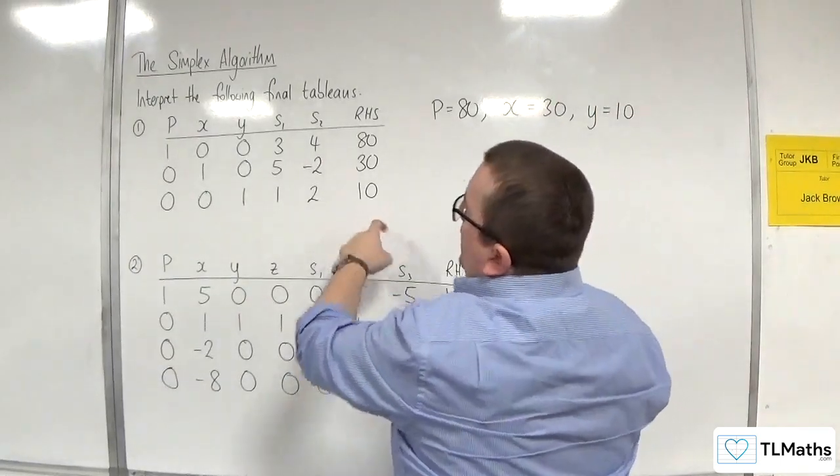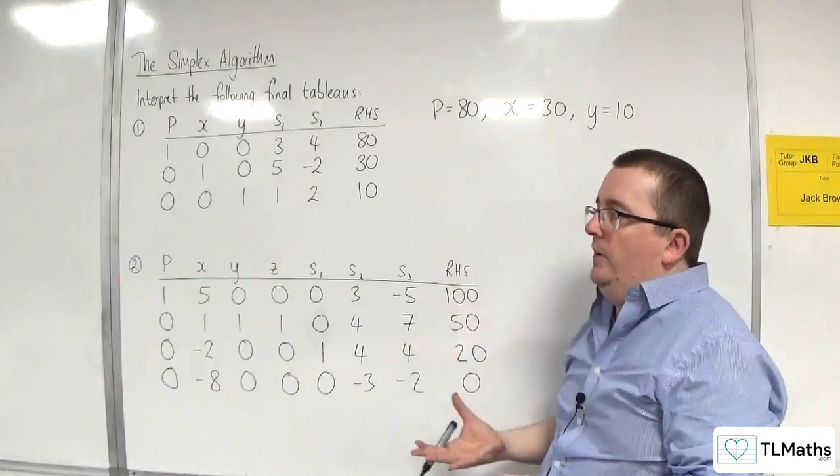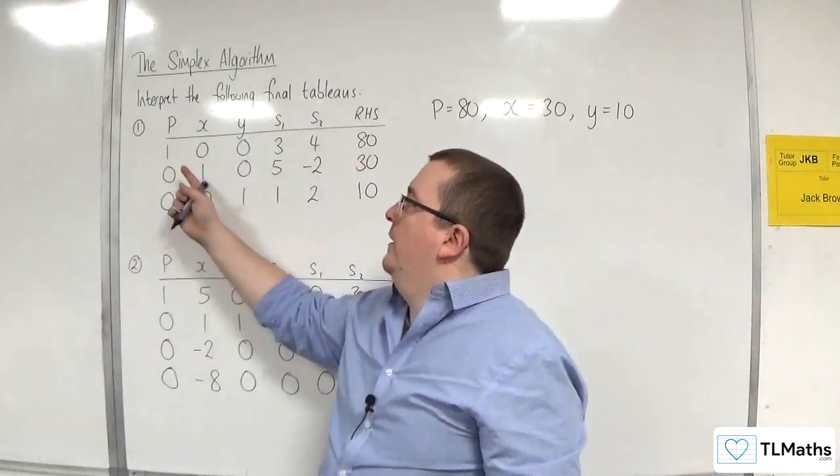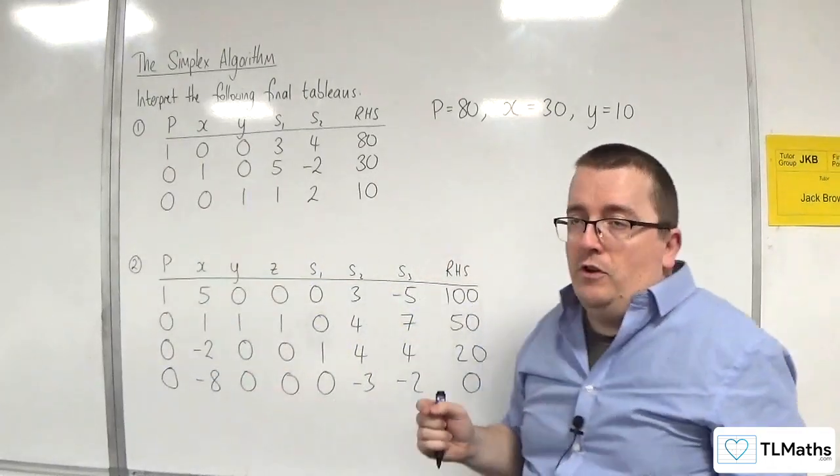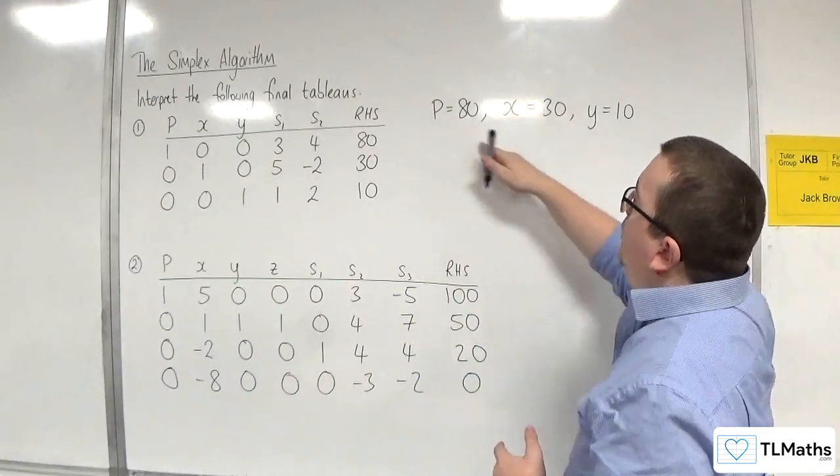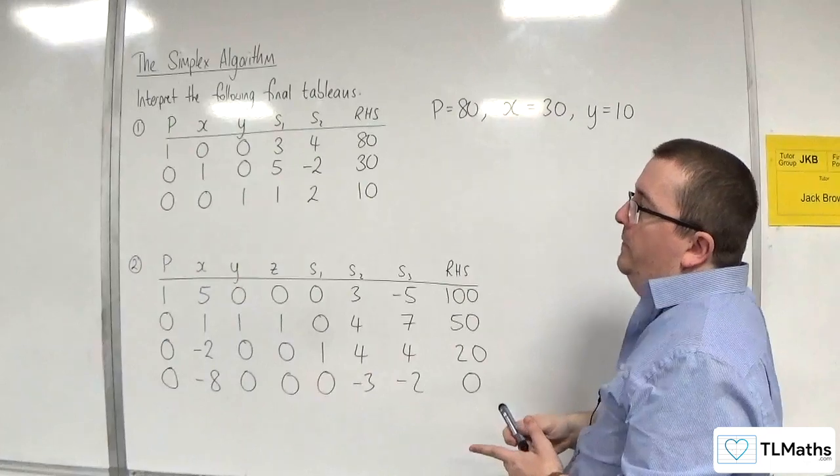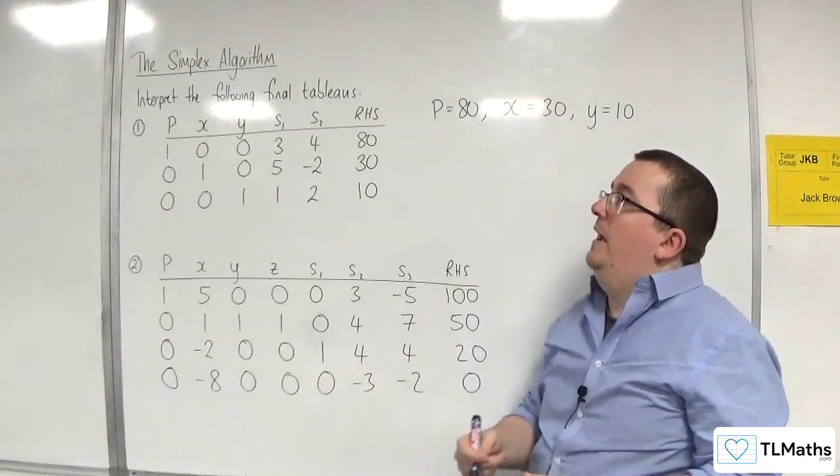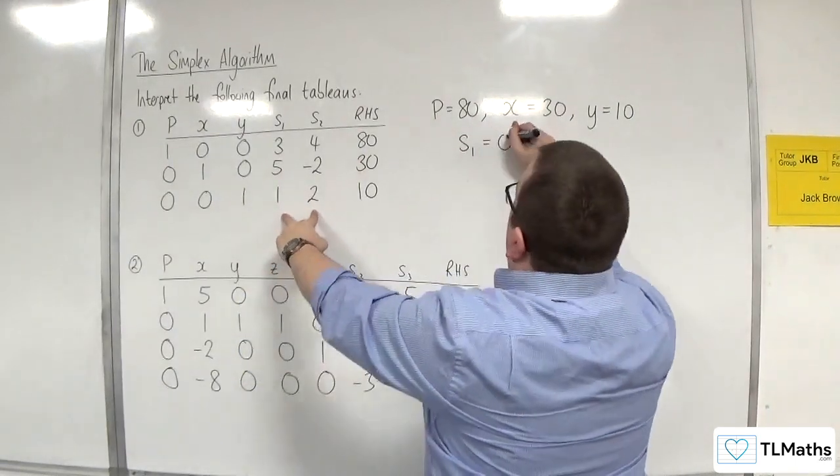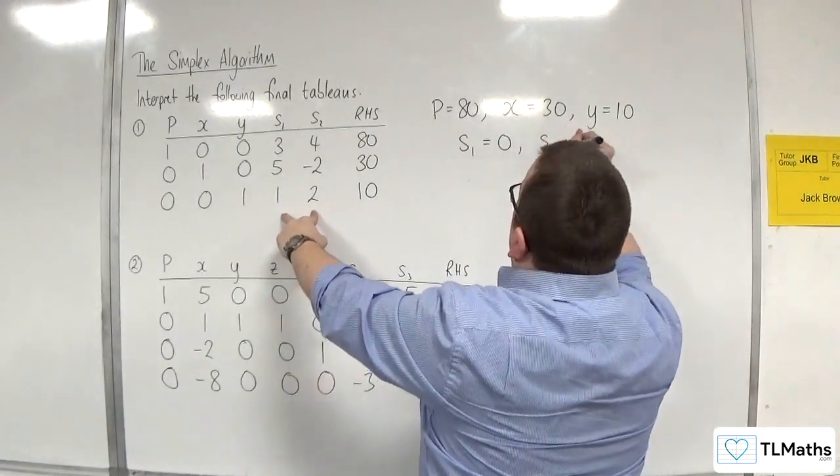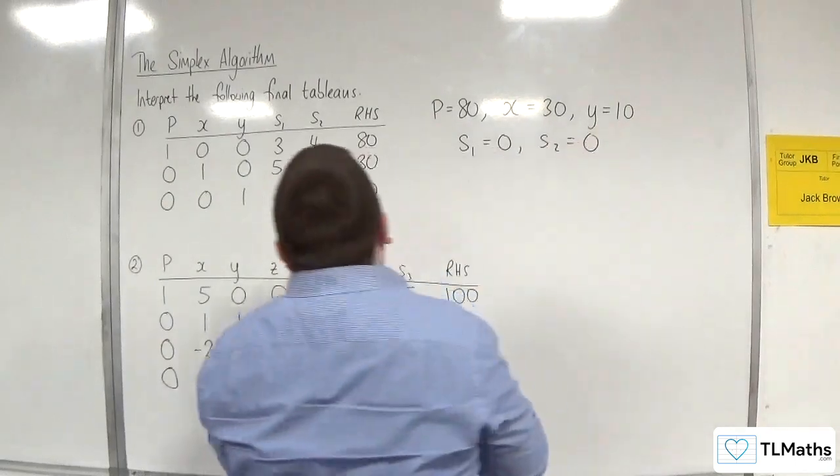Essentially, if the variable is basic, which is identified by the fact that you've got a 1 in the column and the rest are 0s, then you can read off the value from the right-hand side. If a variable doesn't have that, so S1 and S2 are non-basic, any non-basic variable are 0. So S1 and S2 are 0.